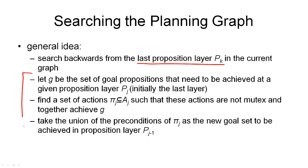So this is where we start the search, and the remaining three steps describe how we proceed with the search from any proposition layer. So we assume that G are the current set of goal propositions that we're trying to achieve in a given proposition layer PJ. Initially, this is the last layer, but during the course of the algorithm, this will move backwards through the graph.